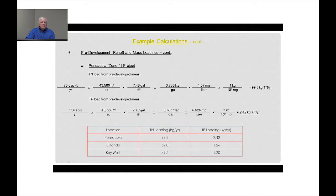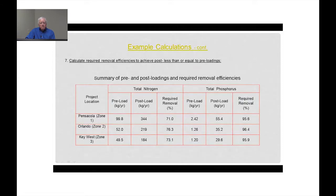Finally, looking at the removal efficiencies necessary to achieve post-development loadings less than pre-development: for total nitrogen, required removals range from 71% in Pensacola to 76% in Orlando. For total phosphorus, we need removal efficiencies in the 95 to 96% range, primarily because the pre-development land uses had extremely low phosphorus concentrations.